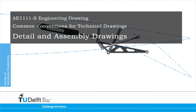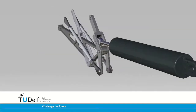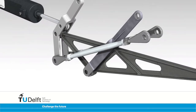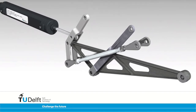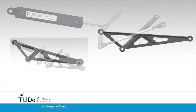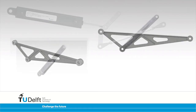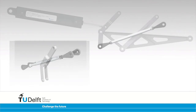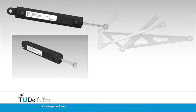In engineering, one will encounter assemblies. An assembly is composed out of multiple components. Consider the wing flap mechanism. The assembly contains the triangular crank, the forked link, the angled link, two support tubes, and the actuator.